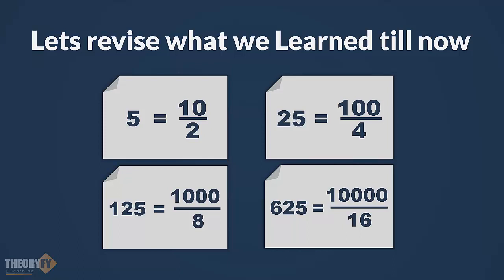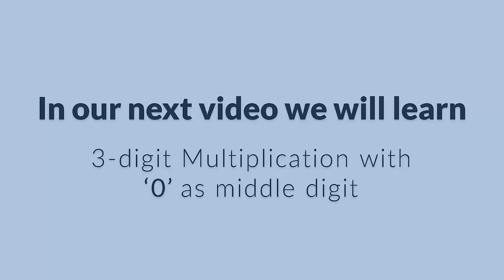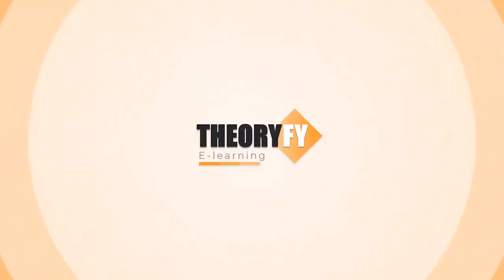So, I believe it was easy to understand. Just remember this thing, these patterns. In our next video, we will learn 3 digit multiplication with 0 as middle digit. So, see you there.